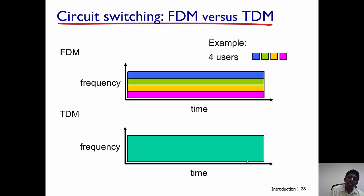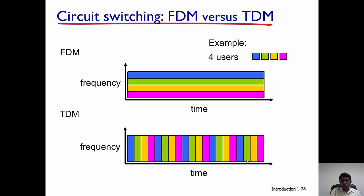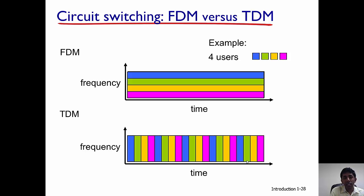In time division multiplexing, time is divided into smaller chunks and each time slot is allocated to a different user. For example, the blue user gets the first, fifth, and ninth time slots; the green user gets the second, sixth, and tenth; and so on.